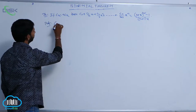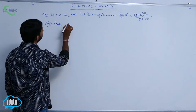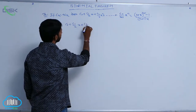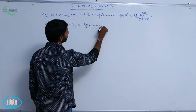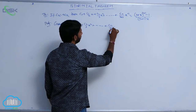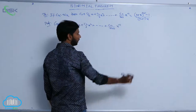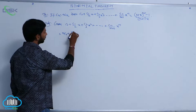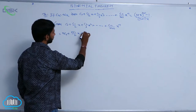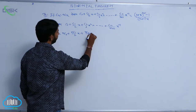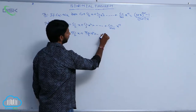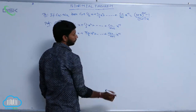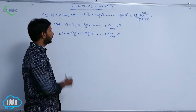This is given: C₀ + C₁/2·x + C₂/3·x² + ... + Cₙ/(n+1)·xⁿ. Here, C₀ means nC₀, that is nC₀ + nC₁/2·x + nC₂/3·x² + ... + nCₙ/(n+1)·xⁿ.